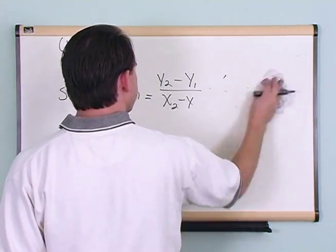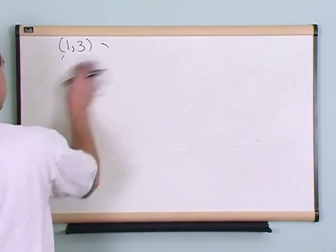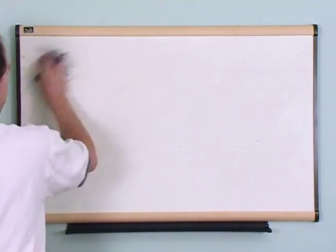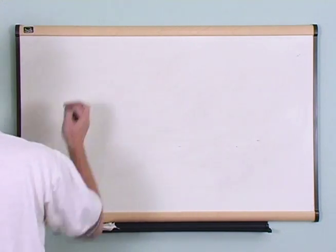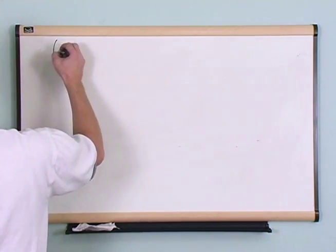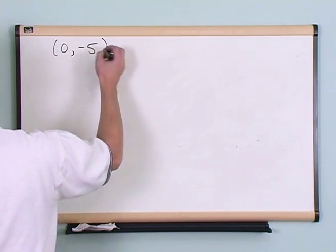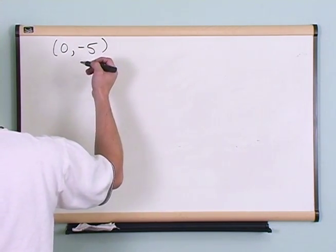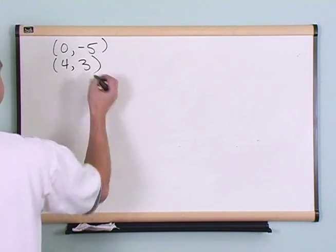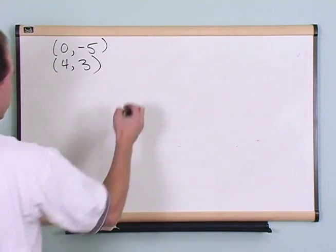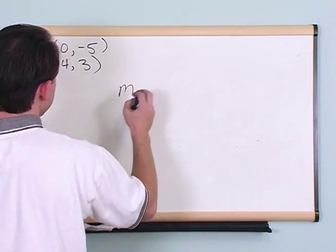That's really the slope of a line — you just need two points to define it. Let's do a couple of additional problems. What if you had the points (0, -5) and (4, 3)? It's equal to rise over run, so we subtract the y values and then the x values.